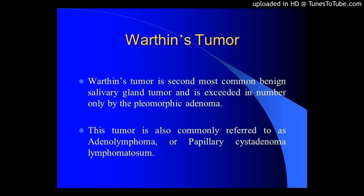FNA showed an accuracy of 79% for Warthin's tumor. Cytological misinterpretation can occur in the presence of morphology other than classical Seifert type 1. An awareness of these potential pitfalls should underscore the need for avoiding single cytologic interpretation.